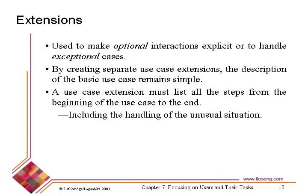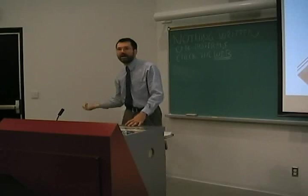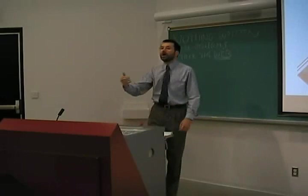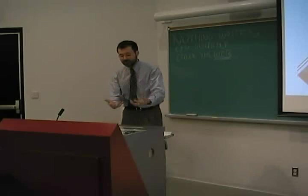By showing extension use cases separately, you're not confusing the main path. The main path shows the normal way when everything goes right — the student logs in, displays courses available to them, clicks the course they want, clicks register, the system says OK, and they're done. There are plenty of exception paths: the course they want isn't available, it's full, or they don't have the prerequisite. We could represent all these as extensions.